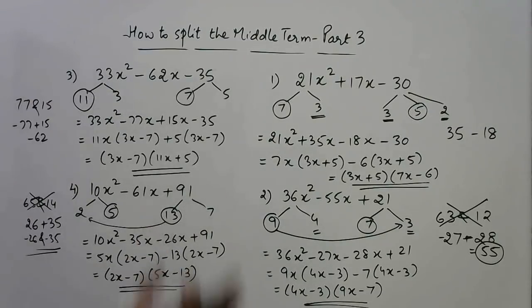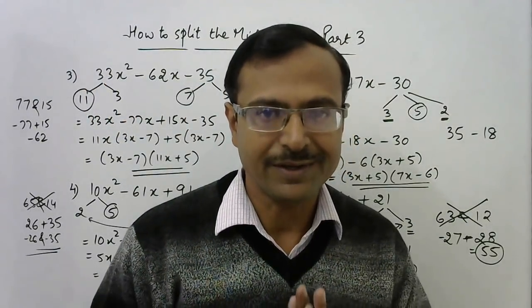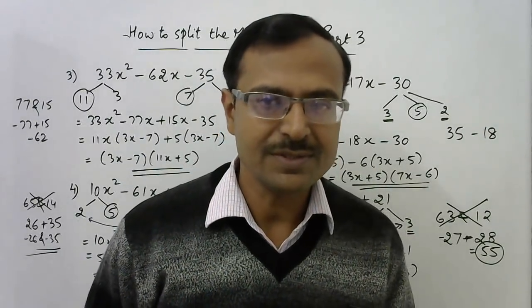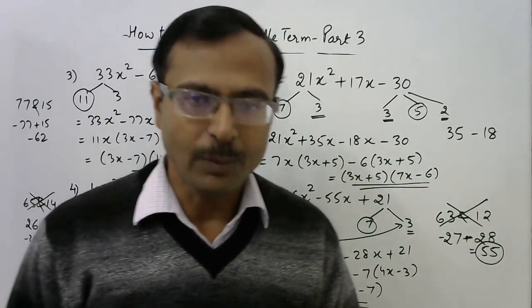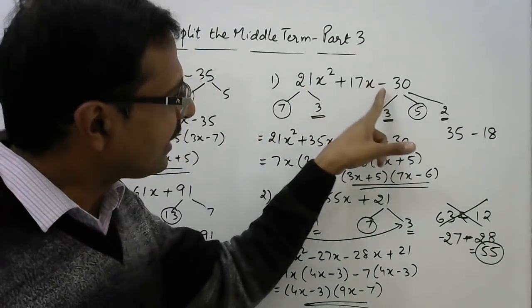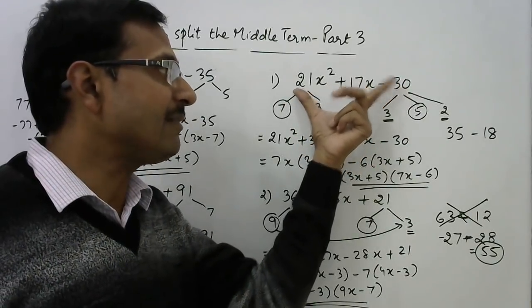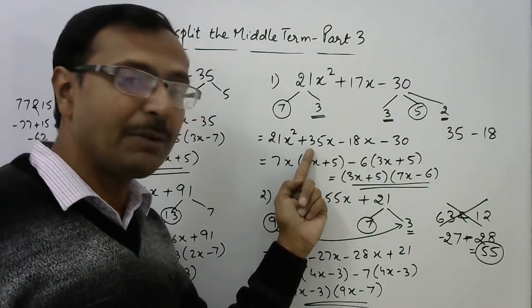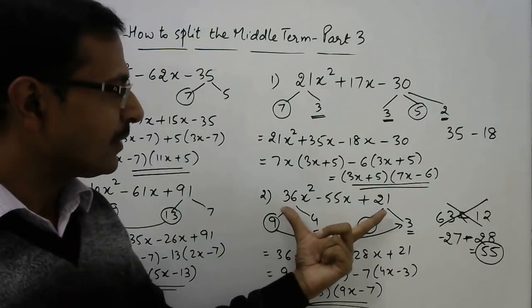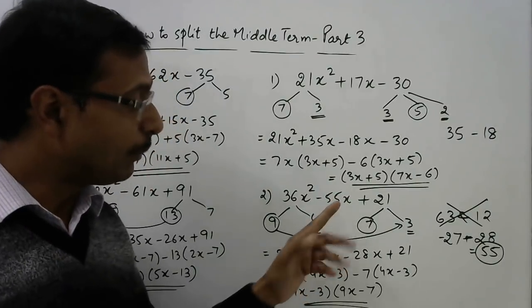So friends see, the questions looked quite complicated, but by following a particular shortcut, by following a particular method, these things will become very very easy for you. Friends, these are the questions you need to master in order to succeed in competitions as well. As you can observe, in the first question, we had the product as negative, but the middle term was positive. So whenever the product is negative and the middle term is positive, then the greater one will be positive and the smaller one will be negative. Whereas in this question, we have the product as positive and the middle term as negative. In this case, both will be negative.